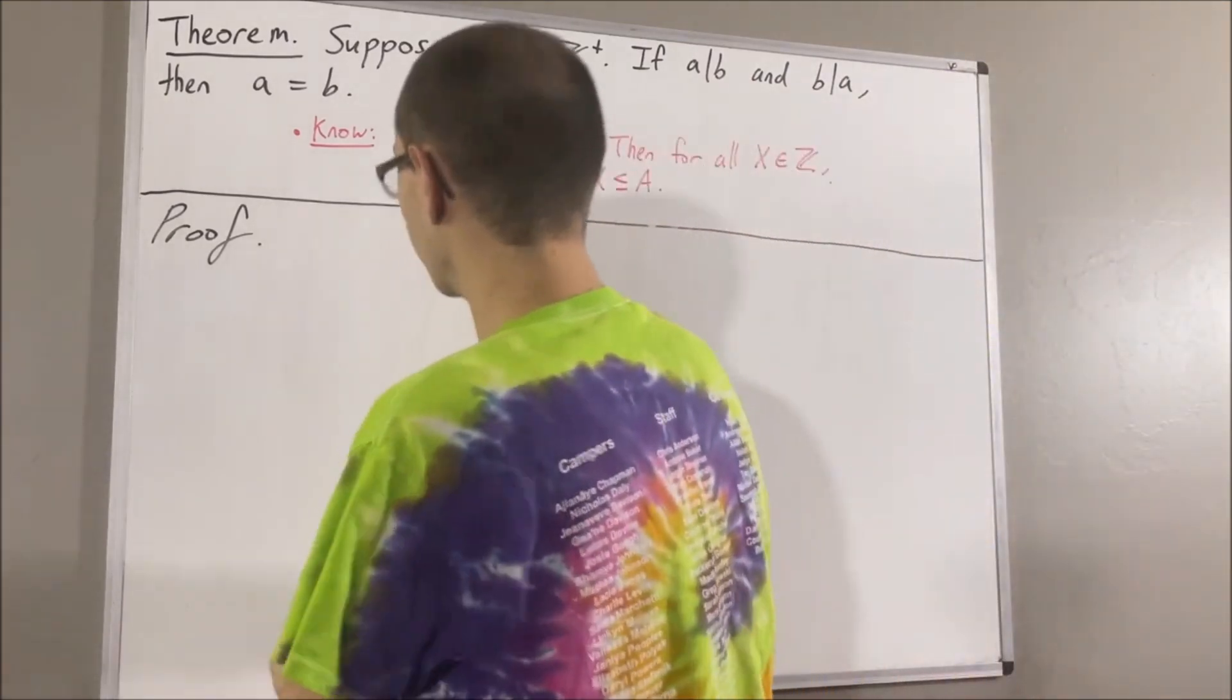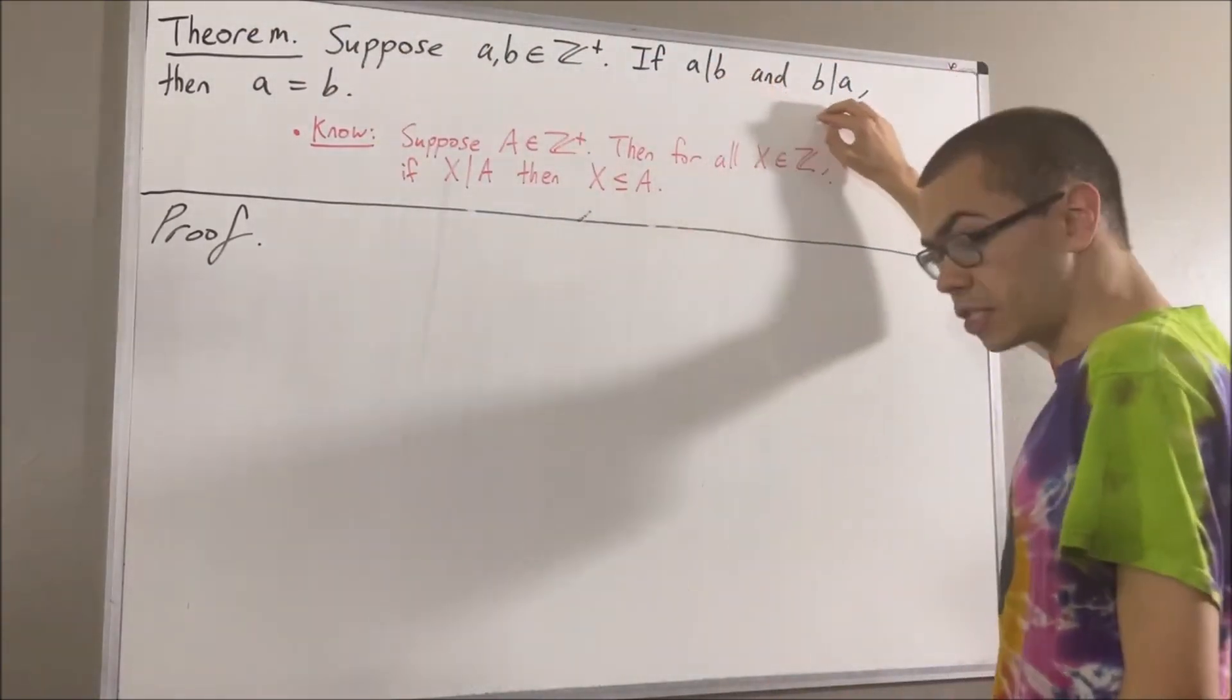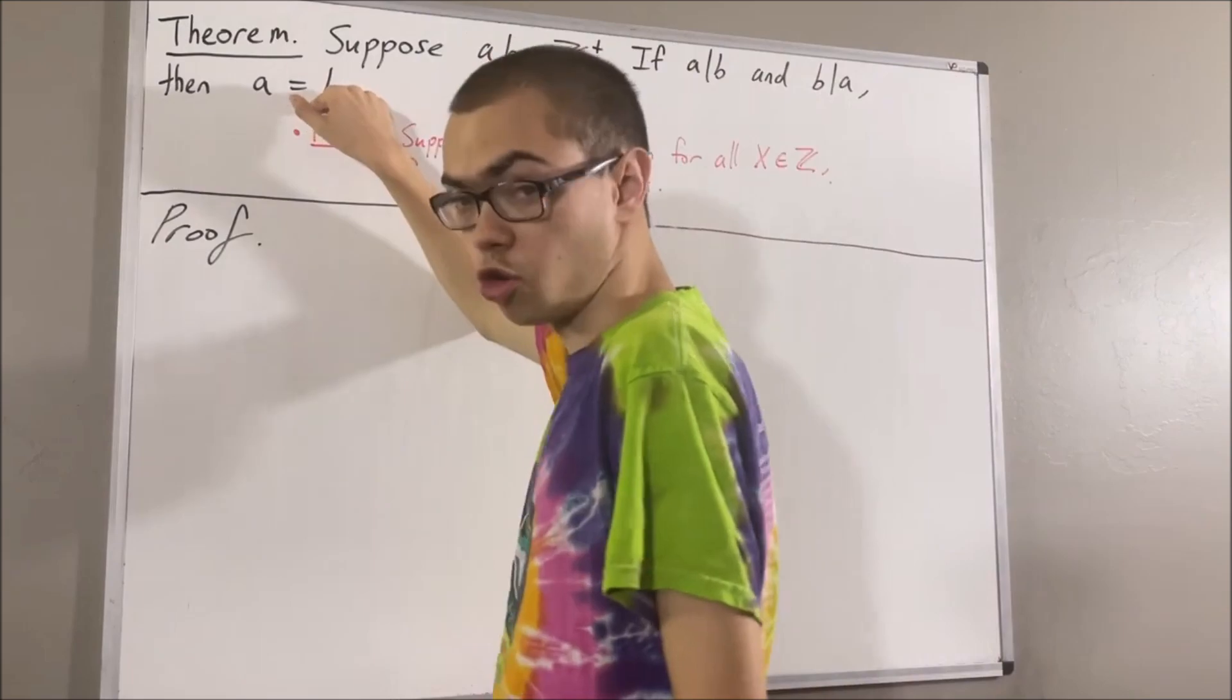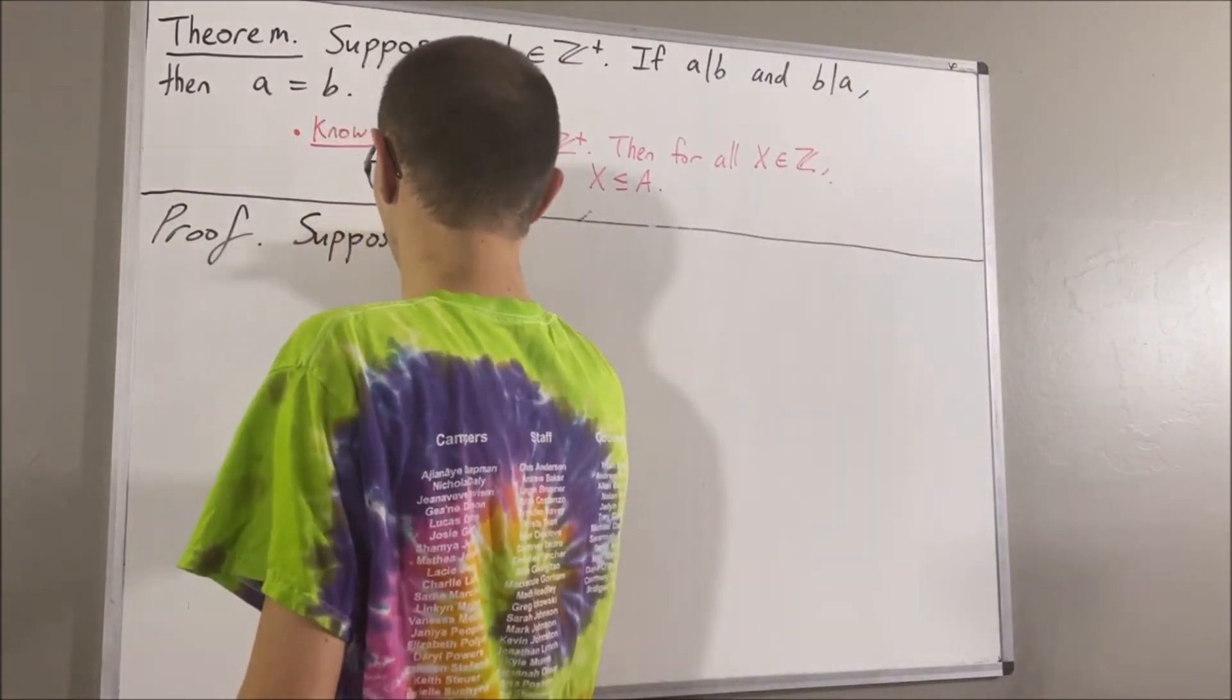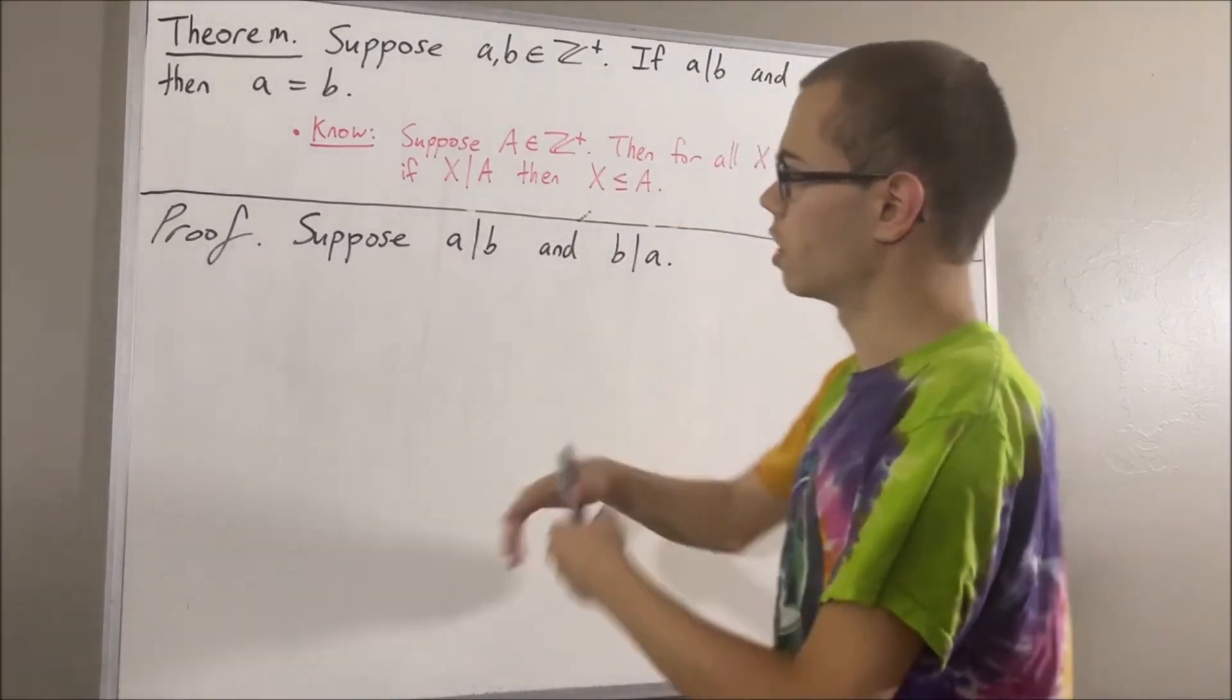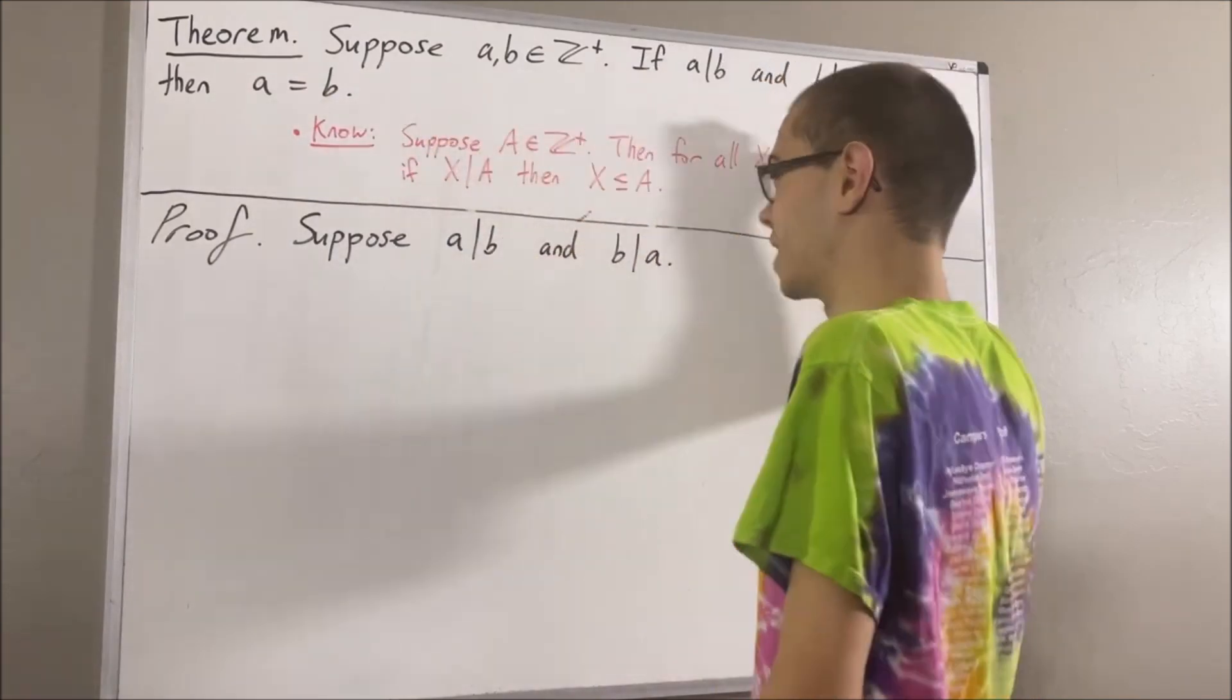Okay, so now let's get into proving this theorem. We're trying to prove if these two things are true, then this is true. So let's suppose that these two things are true. And the whole goal is to show that A is equal to B. Now let's apply this fact.